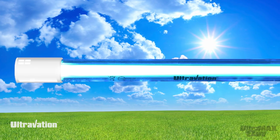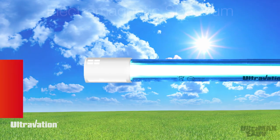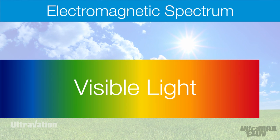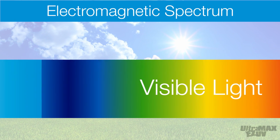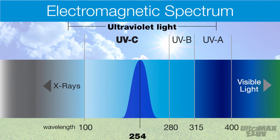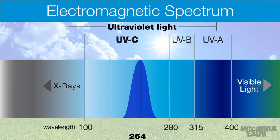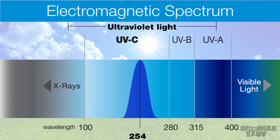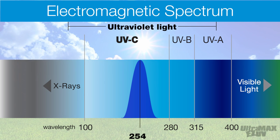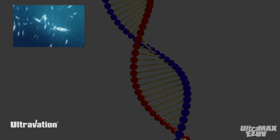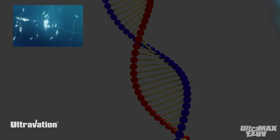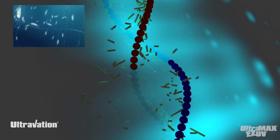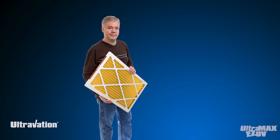UV light is a natural disinfectant and a component of sunlight. Scientifically, UV is a part of the electromagnetic light spectrum, falling just below the visible light frequencies, and the germicidal wavelength of UV light centers on 254 nm. UV light works as a disinfectant because it is able to penetrate cell tissue and break up cellular DNA.